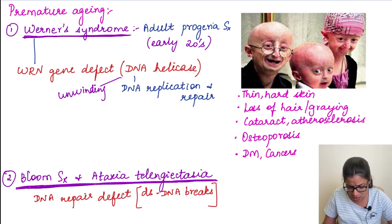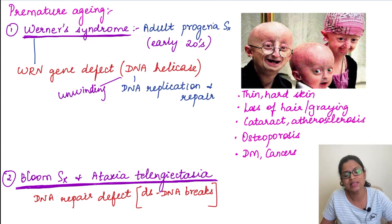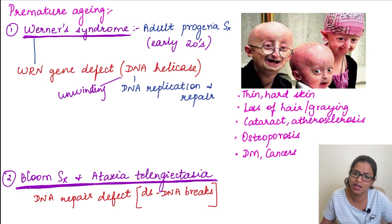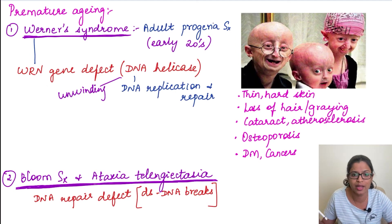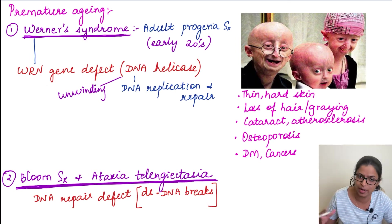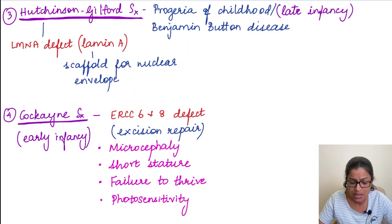Moving on to the next syndromes: Bloom syndrome and Ataxia telangiectasia. These again have a defect in their DNA repair genes involved in double-stranded DNA breakage repair. These patients will also have premature aging.